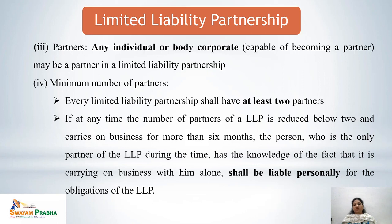An LLP should have at least 2 partners. If the number of partners is reduced below 2 and the business continues for the next 6 months with the knowledge of the sole remaining partner, that person shall be solely responsible for the obligations of the LLP. The partner running the business alone bears full responsibility.